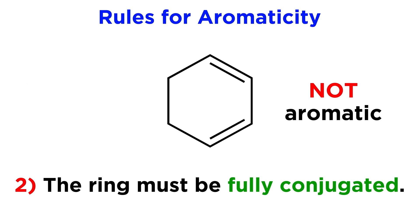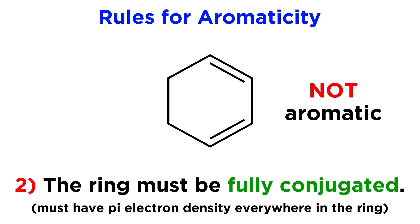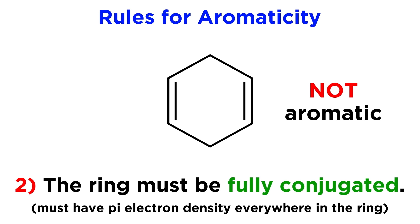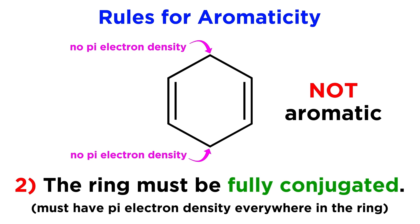The second reason that this would not be aromatic constitutes the second requirement for aromaticity: the system must be fully conjugated. If we take a pi bond away from benzene, it is no longer fully conjugated. Even though there is some delocalization, there is still a portion of the molecule that has no pi electron density. The same goes for this other diene, where the pi bonds are completely localized, so these two carbons do not possess any pi electron density.